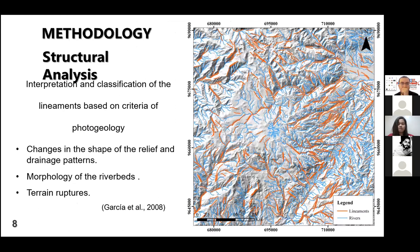The interpretation and classification of the automatic lineaments was based on visual criteria characteristics of photogeology — for example, changes in the shade of the relief and drainage pattern, morphology of the riverbed, changes in the direction of drainage, and terrain rupture.